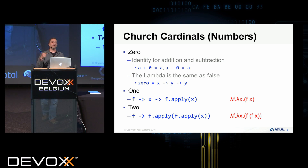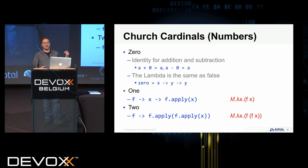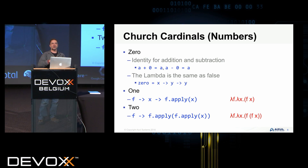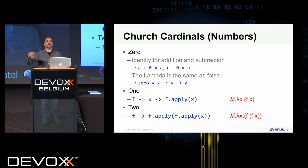If we want to create numbers, we simply apply a function to x in our Lambda expression. For higher numbers, we apply that function multiple times. For one, we have a Lambda expression which returns a Lambda expression that applies a function to a value. For two, we apply the function twice to a value — and you can do that as many times as you like.